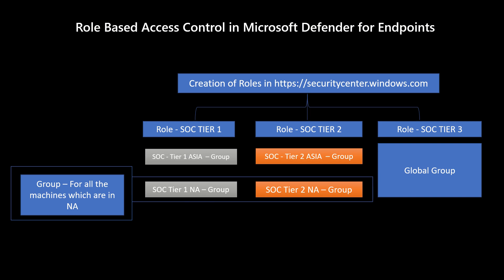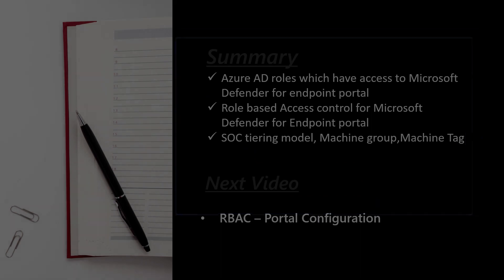So to summarize what we've understood about the RBAC capability: first, define custom roles in the Microsoft Defender for Endpoint portal. Then make sure you have device groups so you can map user access. When the user signs in to securitycenter.windows.com, they get the respective permissions assigned to them.